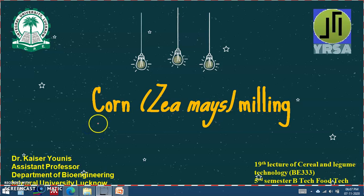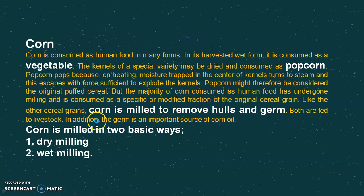Good morning. In this lecture we will study corn milling. Corn is consumed as human food in many forms — for example, as a vegetable, as popcorn, and mostly as corn flour. This corn flour is achieved through two basic ways.